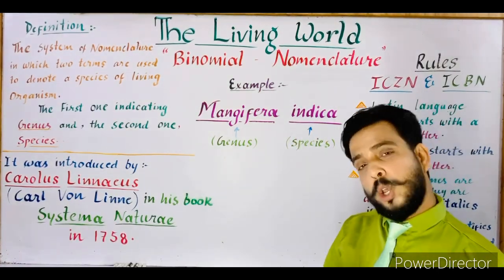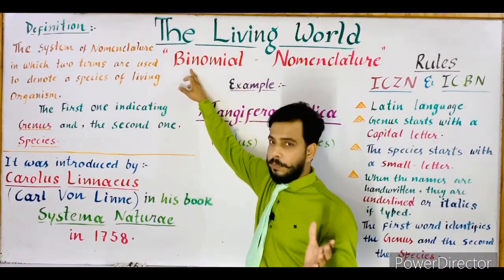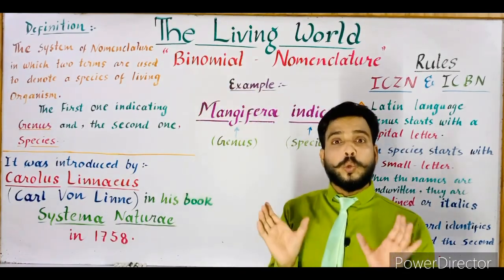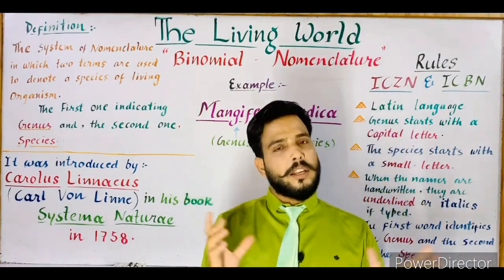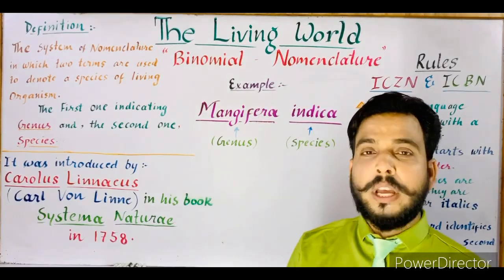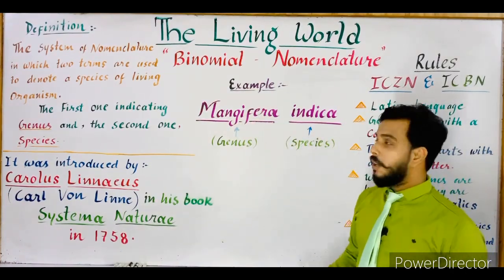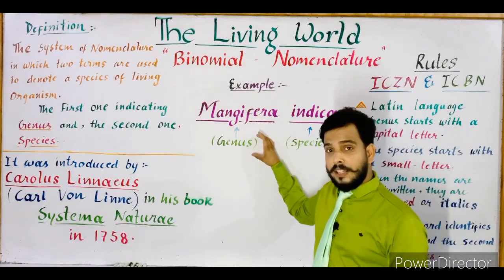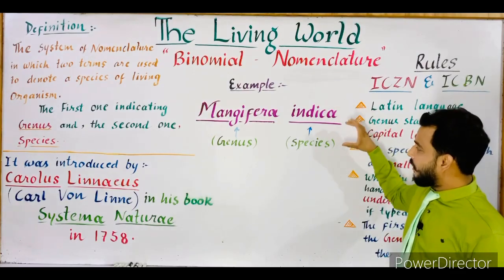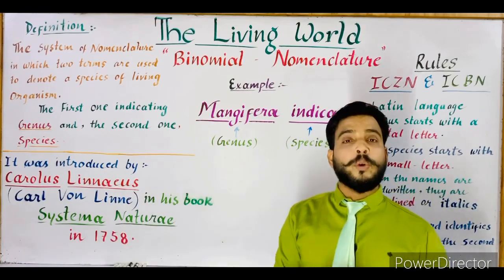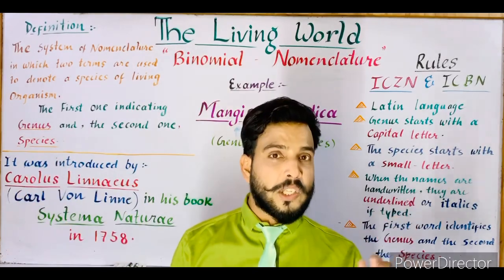So first of all, what is the meaning of 'binomial'? There are two terms: 'bi' represents two, and 'nominal' means name — so there are two names in this type of nomenclature. For example, the scientific name of mango is Mangifera indica. As you can see, there are two names: Mangifera is the name of the genus, and indica is the name of the species.